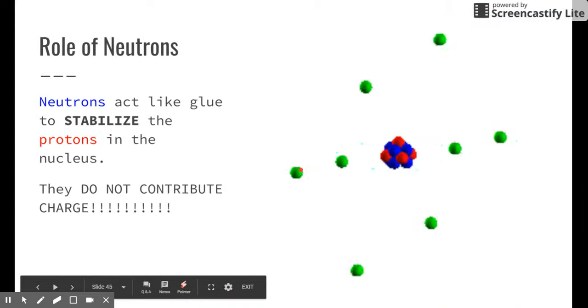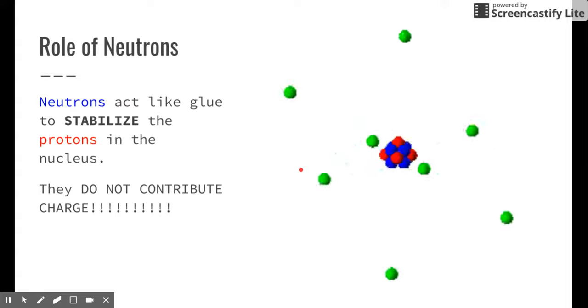In this note-taking video, we're going to talk about and focus on the role of neutrons. Neutrons act like glue to stabilize the protons in the nucleus. Why do they need to do that? Well, protons are positively charged. All of them are. They don't want to be near each other when positive meets positive, like charges, repel each other. Think of taking two of the same sides of a magnet and trying to stick it together. Usually it repels. So neutrons, because they do not contribute to charge, they can get in there, they can hug those protons together and stabilize them in that nucleus.